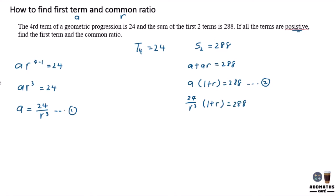So in this case, bring R^3 to that side, it will be 24 plus 24R equal to 288R^3. So 0 equal to 288R^3 minus 24R minus 24. So in this case,